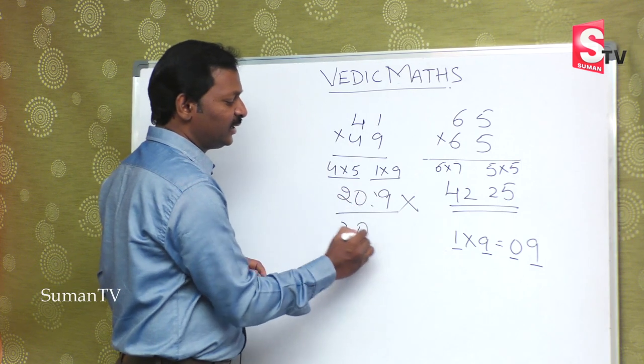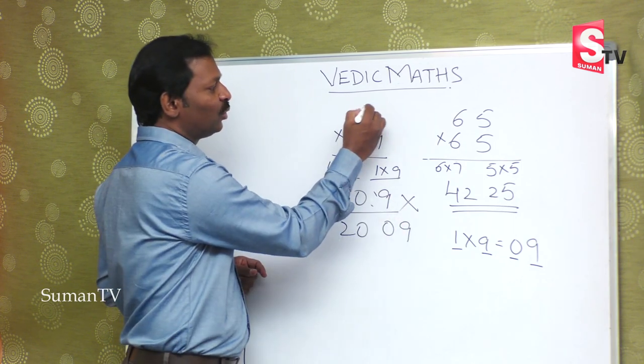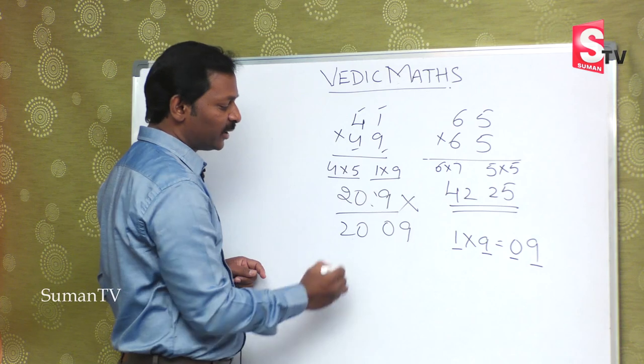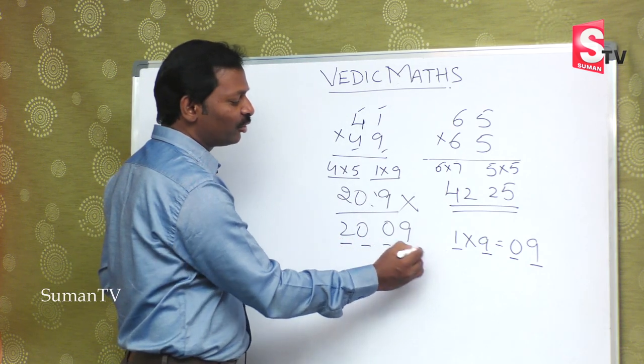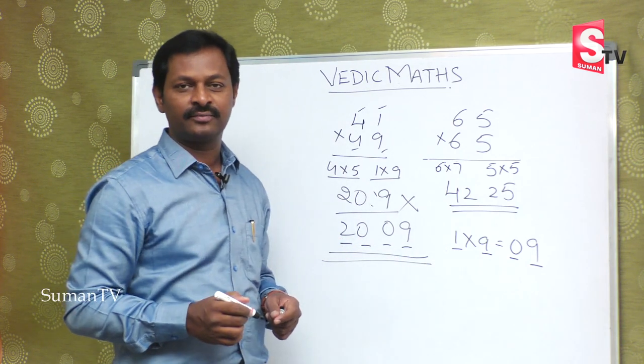This is 20 and this is 09. So total: 1, 2, 3, 4 digits in the answer. The answer has 4 digits. This is the right answer.